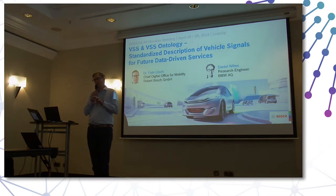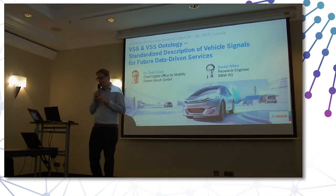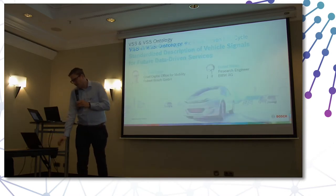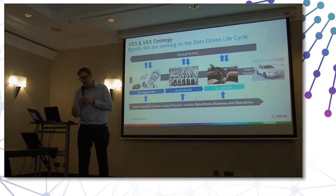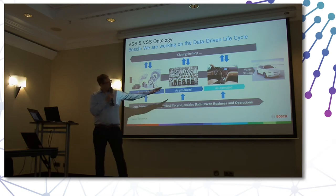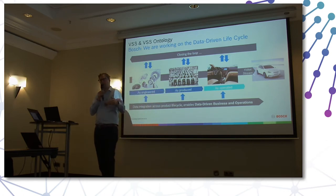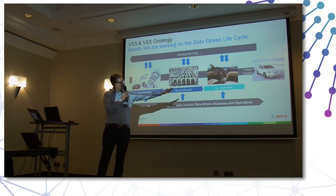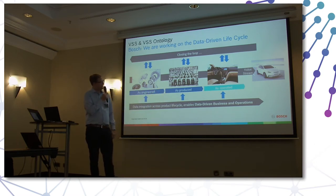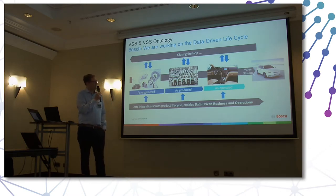Opening up the perspective: we have talked about vehicle data, but there is much more. The operations data is just the last phase where components are installed in the vehicle that Bosch produces, the vehicle is sold to the customer, and it is driven on the road generating a lot of operations data. But there is much more happening before in the life cycle of the product — this applies to the vehicle but also to all components manufactured by tier-one or tier-two suppliers.